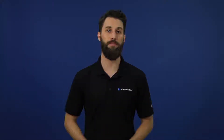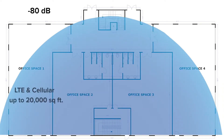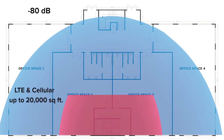Higher frequency ranges are weaker than lower frequency ranges — the higher you get, the weaker the signal. For example, an incoming signal of negative 80 dB could provide enough coverage for up to 20,000 square feet on the LTE and cellular bands, but only up to 8,000 square feet on the AWS and PCS bands.